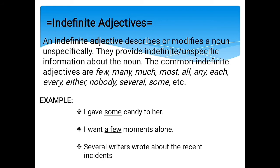The next type is indefinite adjectives. Indefinite adjectives describe or modify a noun unspecifically — they provide indefinite or unspecific information. Common indefinite adjectives are: few, many, much, most, all, any, each, every, either, nobody, several, some. For example, 'I gave some kindness to her' — some has no specific count. 'I want a few moments alone.' 'Several writers wrote about the recent incidents.'